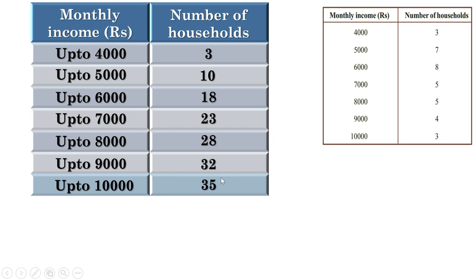The total number of households is 35, which is an odd number, so there is one household at the middle. Adding 1 gives 36, divided by 2 gives 18 — so the 18th household is the middle household, with 17 before it and 17 after it. Let us find the monthly income of the 18th household. Up to 5000 there are 10 households, and up to 6000 there are 18 households, so from the 11th to the 18th the income is 6000. Therefore the median is 6000.